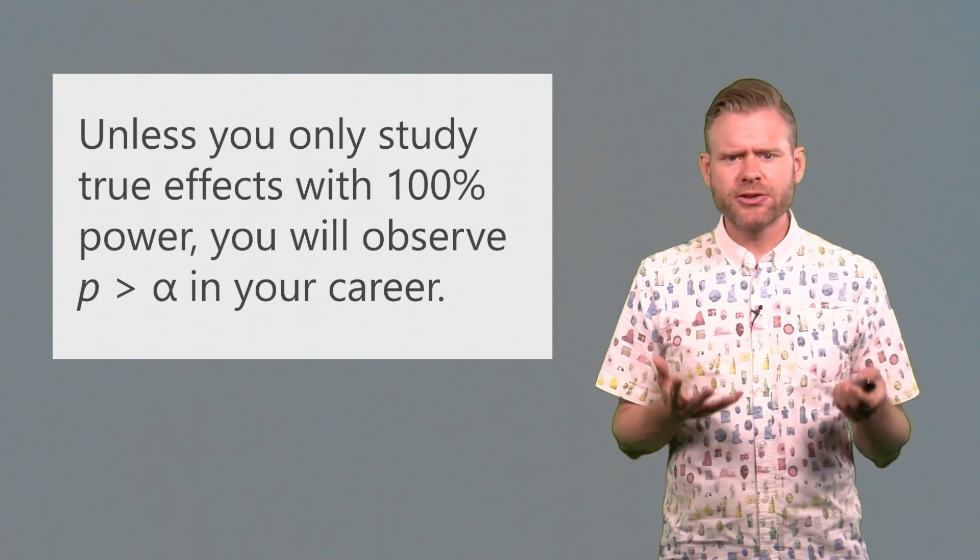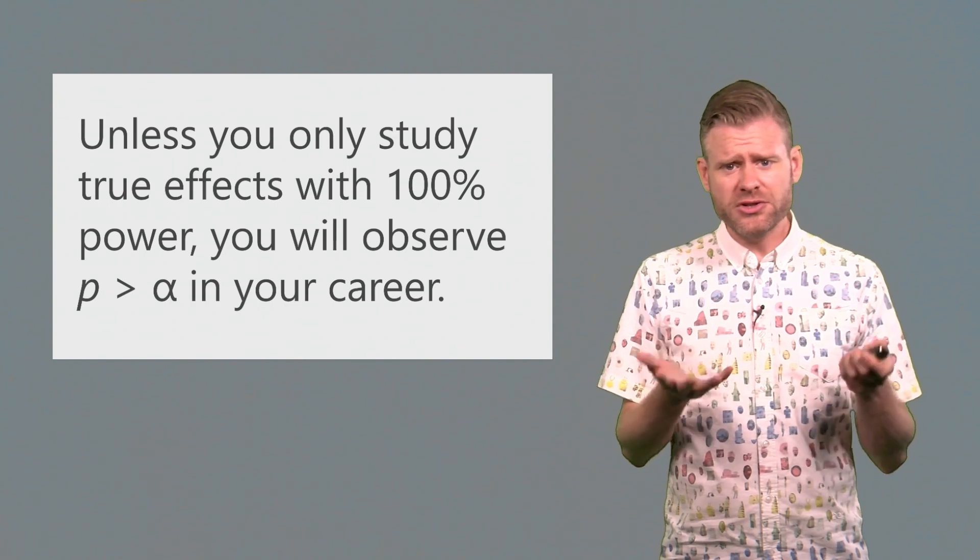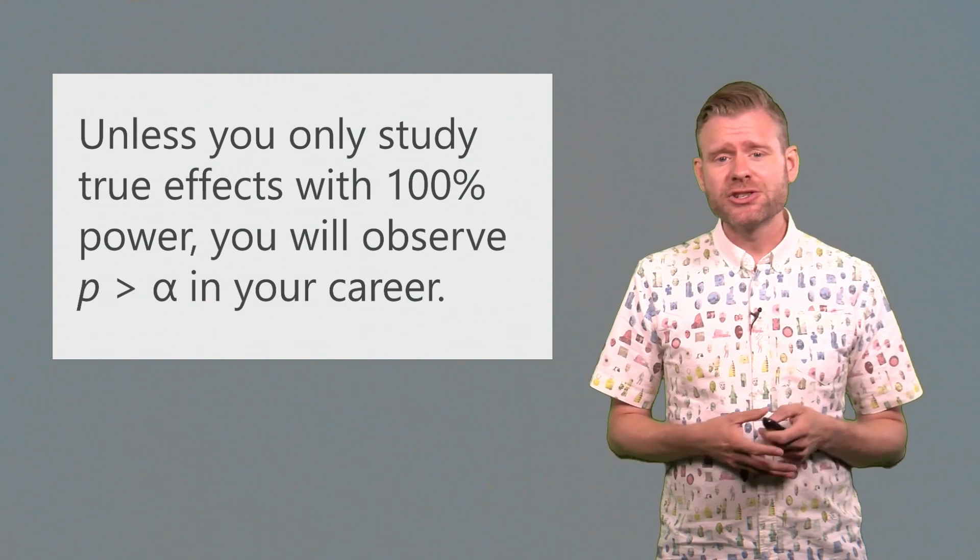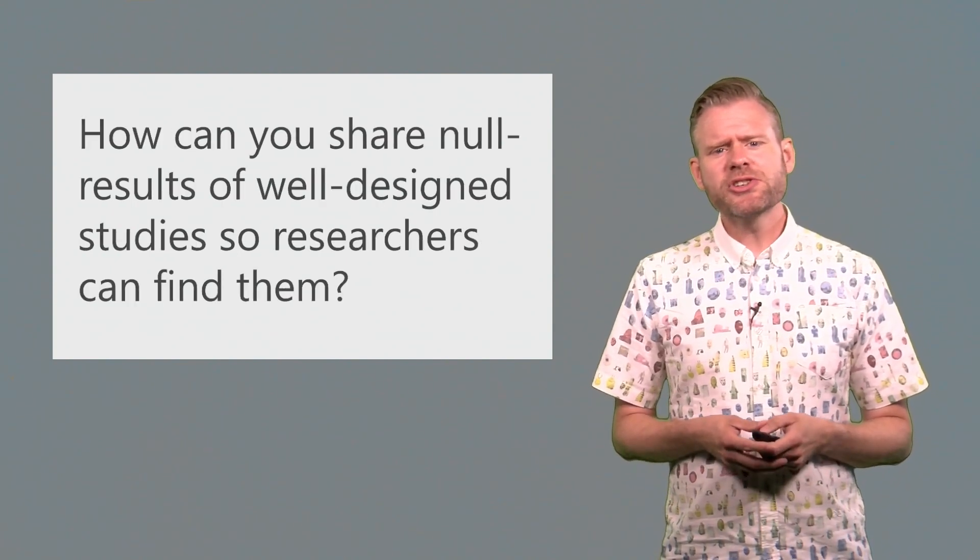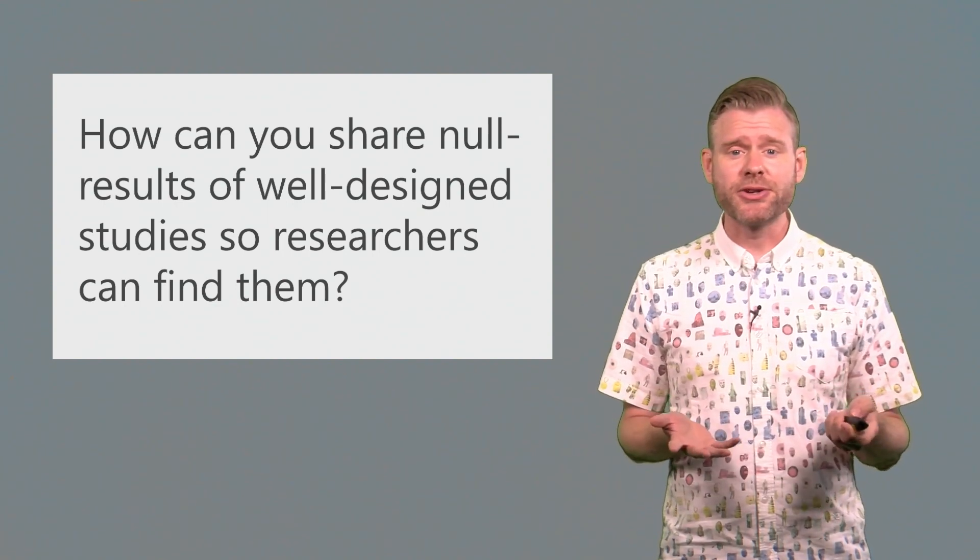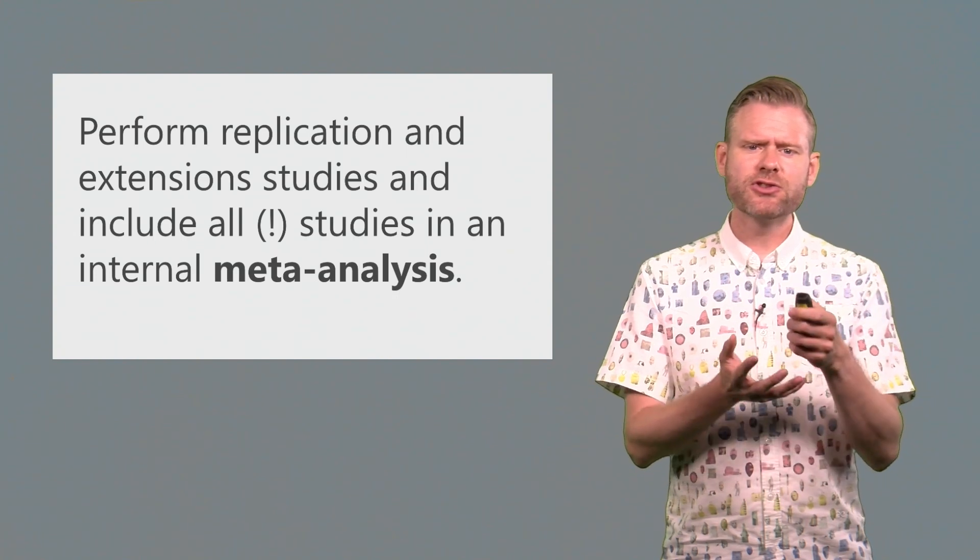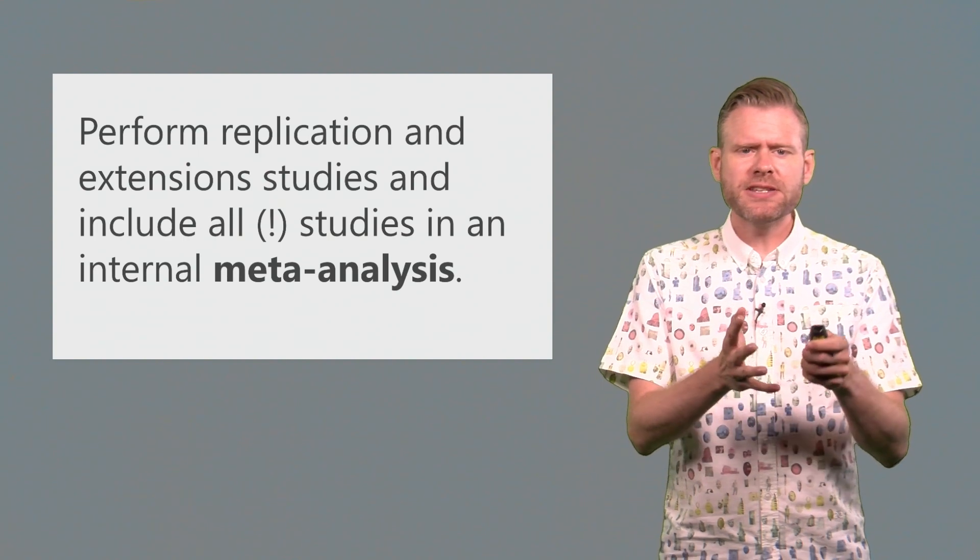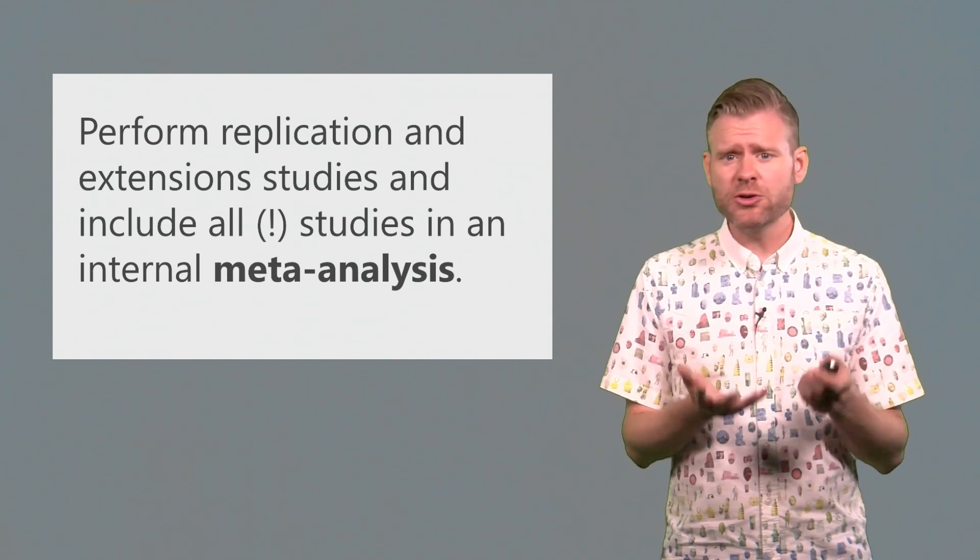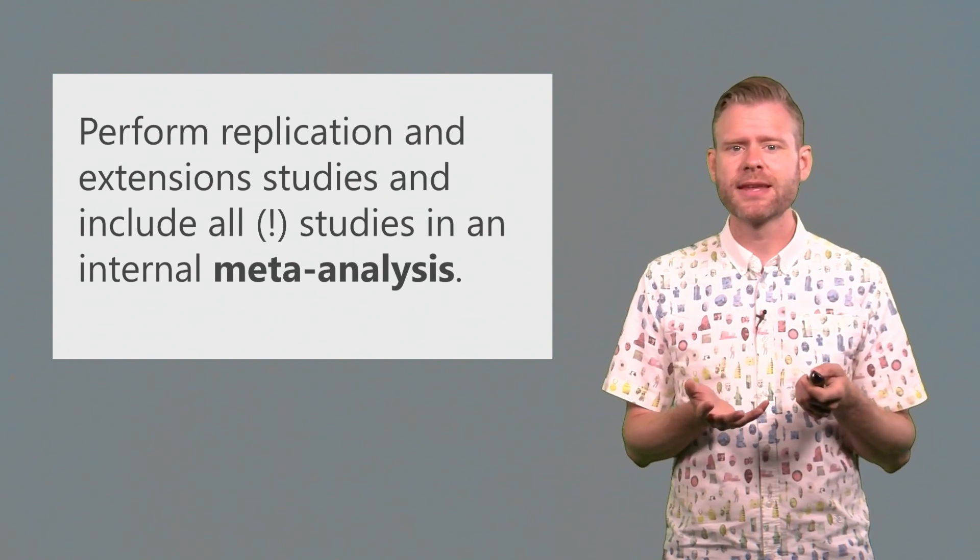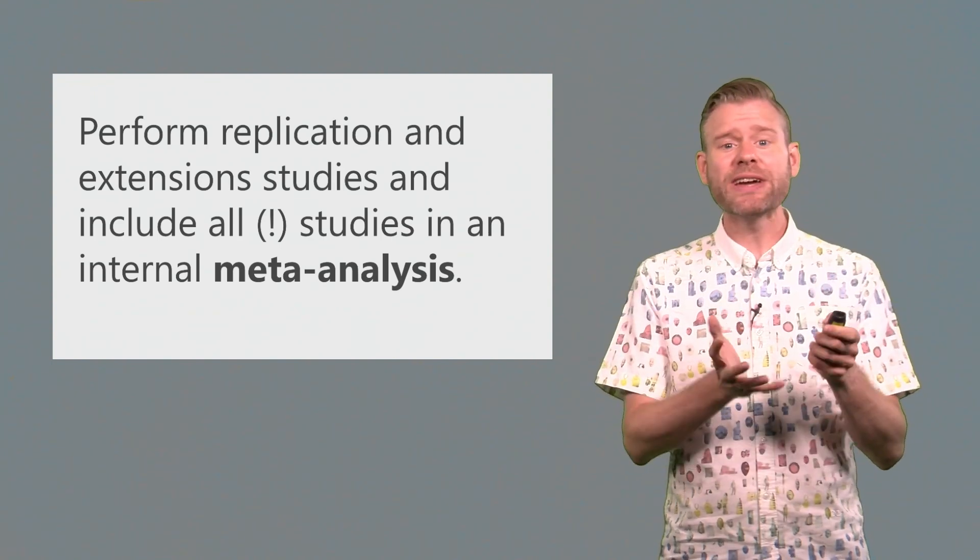Unless you only study true effects with 100% power, which is quite unlikely to be true in your case, you will observe some p-values where the result is larger than an alpha level somewhere in your career. And actually, it should happen quite regularly under reasonable assumptions of the statistical power in your test. So how can you share null results of well-designed studies so that other researchers can actually find them? First of all, it makes sense to try to perform replication and extension studies. Stay true to the original hypothesis and test it in a consistent manner. This makes sure that any non-significant results can be likely attributed to just being a fluke. They're just non-significant because it's a type 2 error, which we know should happen especially in lines of research. So if you perform coherent lines of research that are quite similar conceptually, you should be able to include all of these studies in a small internal meta-analysis.